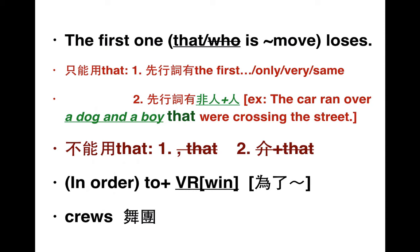什么时候关代只可以用 that？有两种情形：第一，前面先行词有 the first、the only、the very、the same 这些序数或限定词时，关代只可以用 that。第二，先行词同时包含非人和人，例如 'The car ran over a dog and a boy that were crossing the street'，先行词是狗跟人，关代就只可以用 that。